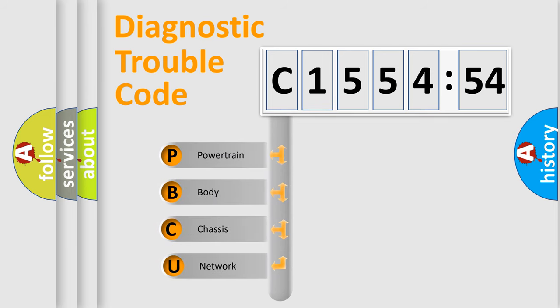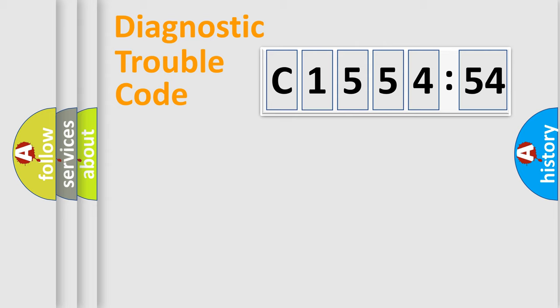First, let's look at the history of diagnostic fault code composition according to the OBD2 protocol, which is unified for all automakers since 2000. We divide the electric system of automobiles into four basic units.